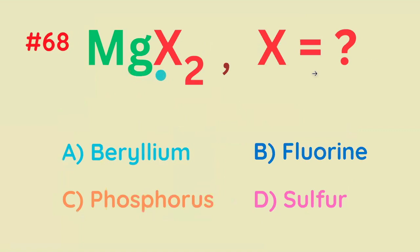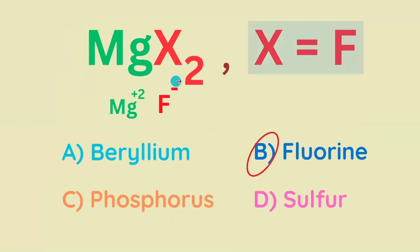MgX₂ — what is X, this mystery element? The correct answer is fluorine, because it's got to have a negative 1 charge, and there are two of them to counteract a positive 2 charge. Fluorine is the only one that is in group 7, needing just one electron to form an octet.